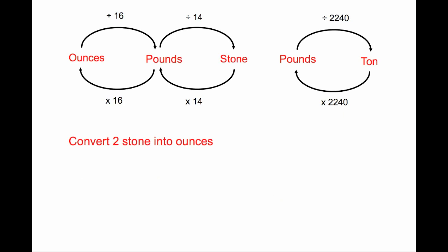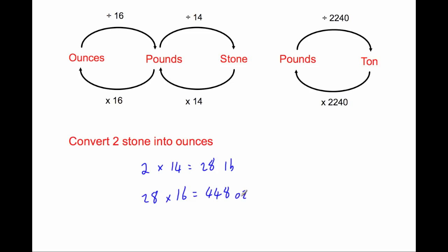Convert 2 stone into ounces. To convert between stone and ounces, we need to convert into pounds first. So we take our 2 stone and times by 14, giving us 28 pounds. Now we want to change that into ounces, so we times by 16. 28 times 16 is equal to 448 ounces.